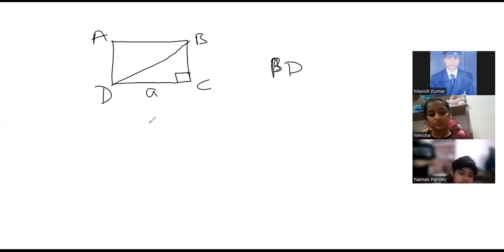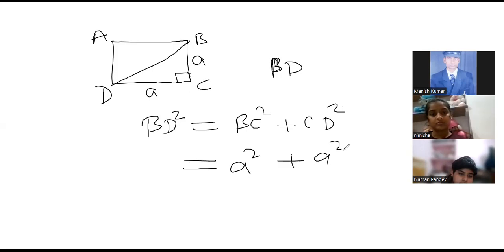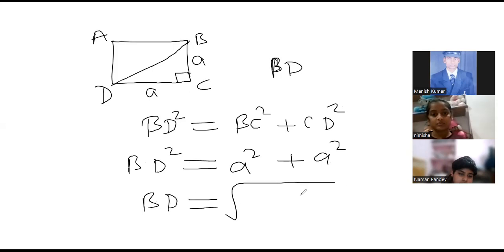First we will use the Pythagoras theorem. This is the right angle triangle. If it is a square or rectangle, there will be a right angle there. Now we can write here: in triangle BCD, BD square will be equal to BC square plus CD square. Or we can write it as BC square means A square because it is a square, and this will also be A. Plus CD square means again A square. So BD will be equal to root under A square plus A square, which is 2A square.